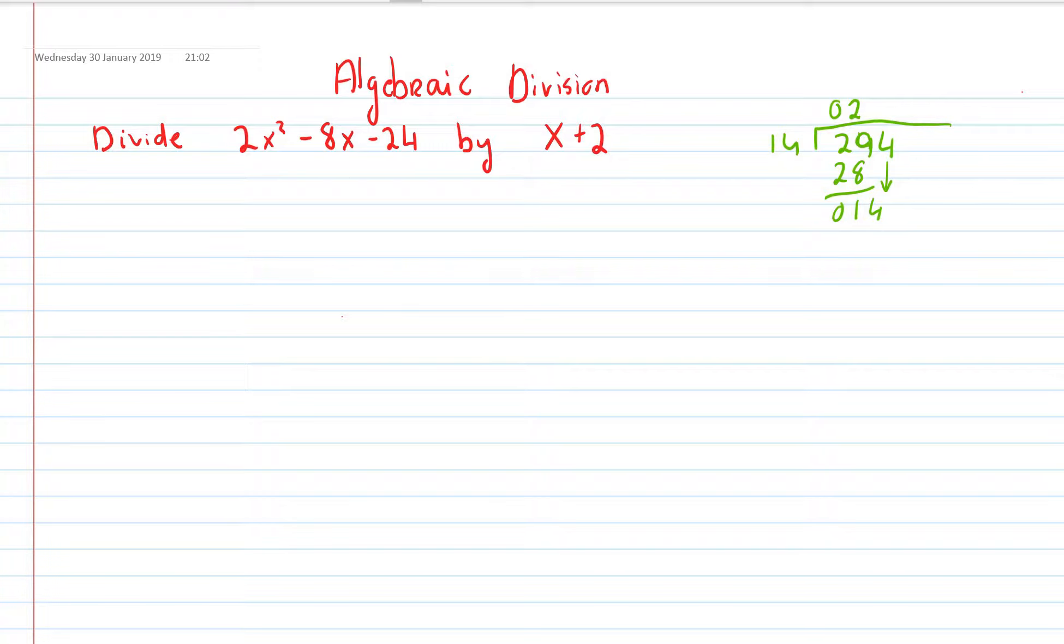And then I'd say how many times does 14 go into 14? Or in other ways that we're looking at, what do I have to multiply 14 by to get to this? This would be 1. And then I'd multiply the 14 by the 1. And I get 14, that would be 0. And my answer would be up here, 21.